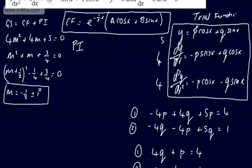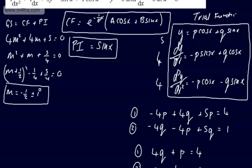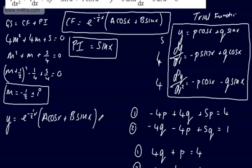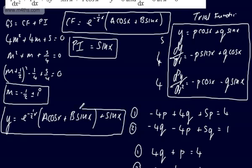Therefore the particular integral is 0·cos x + 1·sin x, so the particular integral is sin x. The general solution is y = e^(−x/2)(a cos x + b sin x) + sin x, where a and b are arbitrary constants.